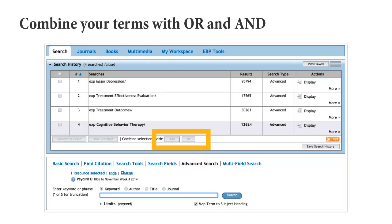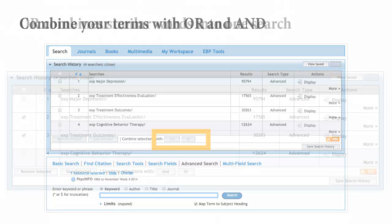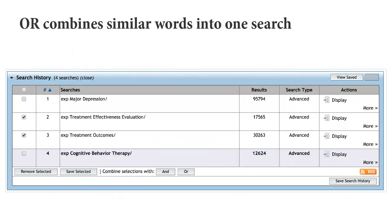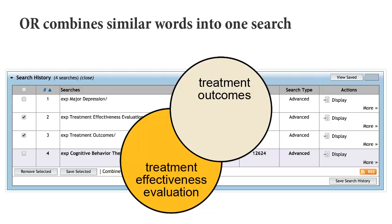First, since treatment effectiveness evaluation and treatment outcomes are related to each other, let's combine them using OR. By combining terms together with an OR, we can retrieve articles about either treatment effectiveness evaluation or about treatment outcomes in one search.